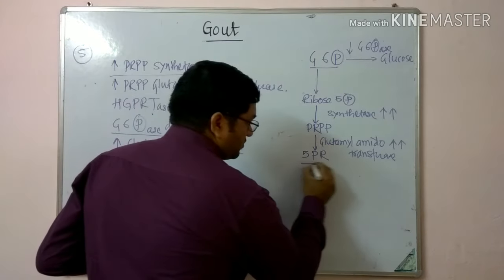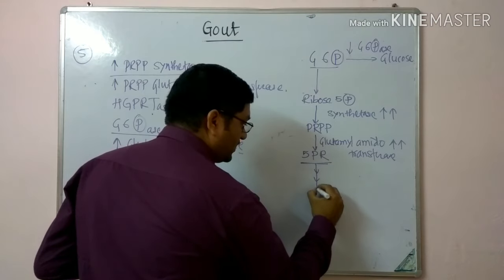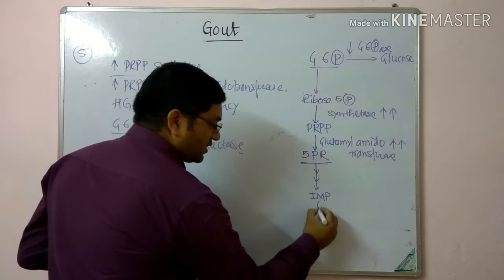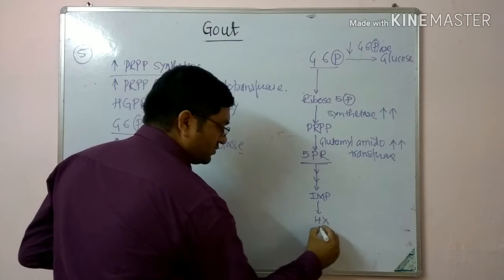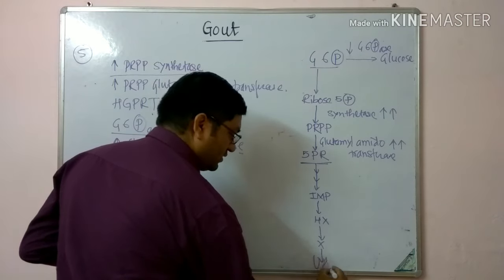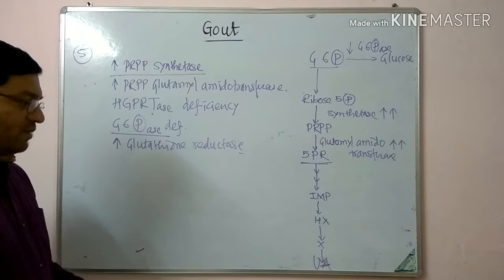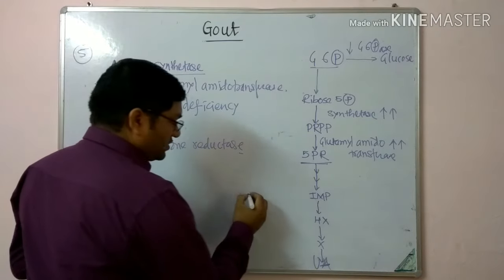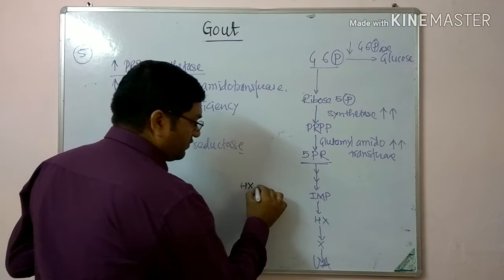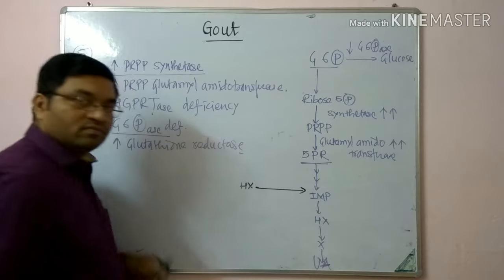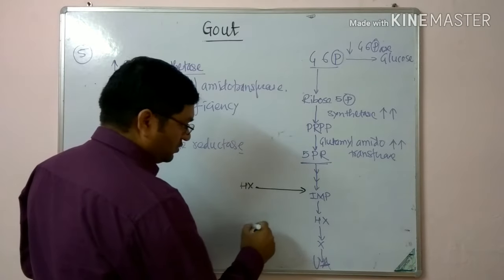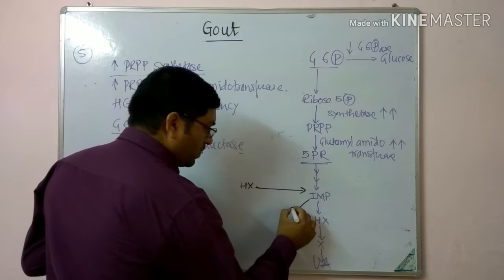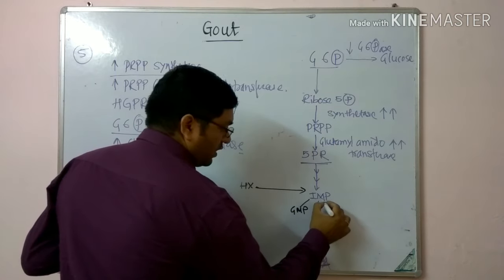PRPP is converted into 5-phosphoribosylamine with the help of glutamyl amidotransferase. Overactivity of this glutamyl amidotransferase leads to increased nucleotide synthesis and increased uric acid production. Through various steps, it is converted into inosine monophosphate (IMP), which is then converted into hypoxanthine, xanthine, and ultimately uric acid.